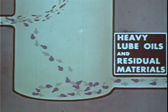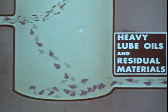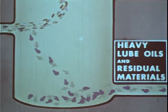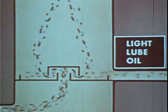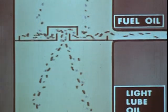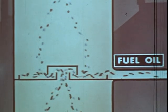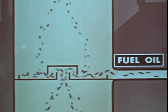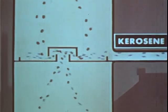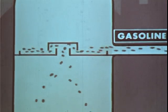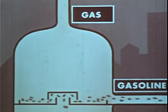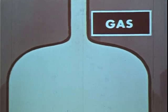Here we see the crude oil being heated — most of it is vaporized. At the bottom of the bubble tower, unvaporized large molecules of heavy lube oil and residual materials are drawn off. At the second level, the light lube oil is condensed out of the vapor and withdrawn. At the third level, the largest of the lighter remaining molecules condense to form the fuel oil cut. At the fourth level, kerosene is condensed and drawn off. At the fifth level, the gasoline molecules become liquid, leaving the very light gas molecules to go out the top of the bubble tower.